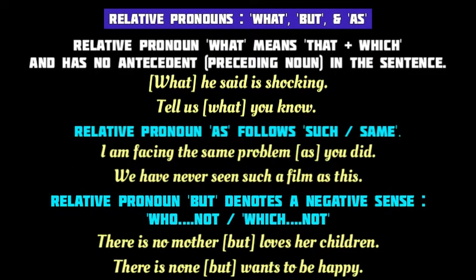What, but, and as are also sometimes used as relative pronouns. The relative pronoun 'what' means 'that which' and has no antecedent in the sentence. For example, 'What he said is shocking' — 'what' is a relative pronoun with no antecedent. Similarly, 'Tell us what you know.' 'As' is used as a relative pronoun when the words 'such' or 'same' precede its antecedent, for example: 'I am facing the same problem as you did' and 'We have never seen such a film as this.'